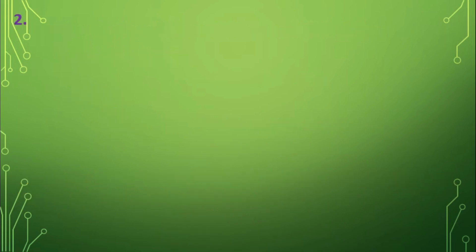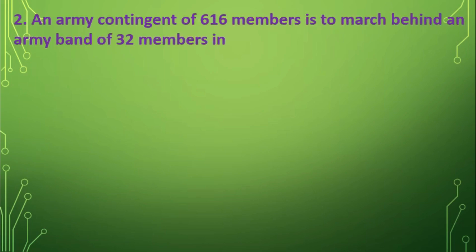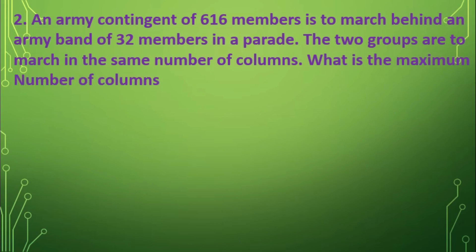Example 2. An army contingent of 616 members is to march behind an army band of 32 members in a parade. The two groups are to march in the same number of columns. What is the maximum number of columns in which they can march?